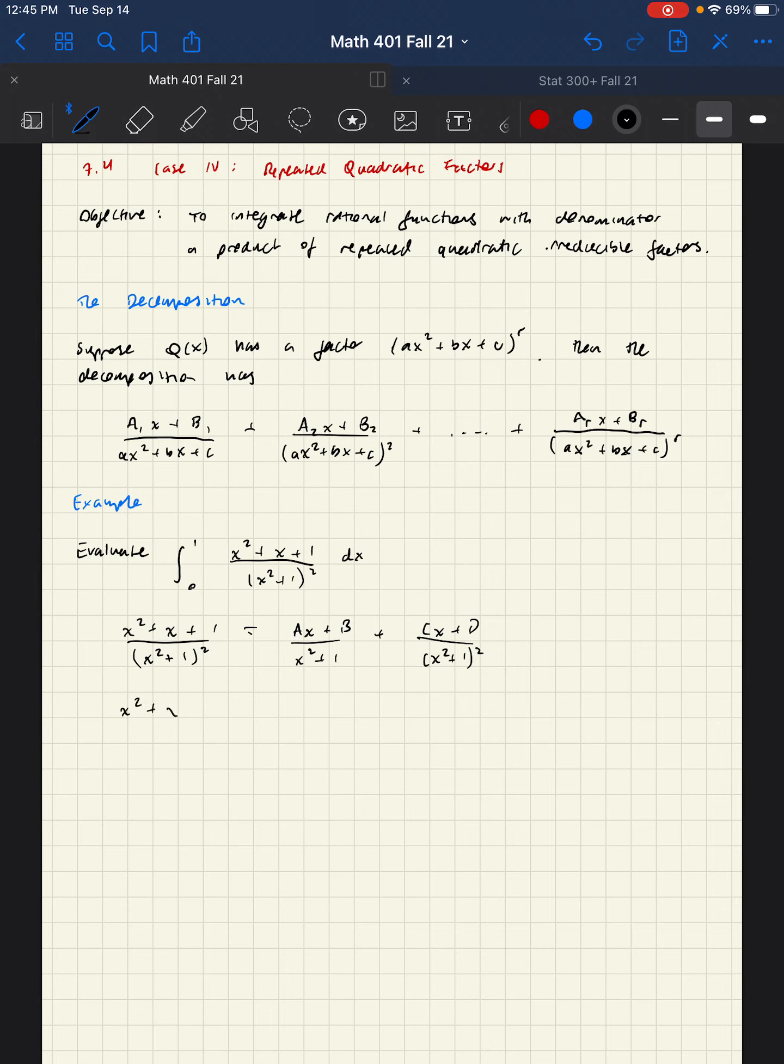Let's just follow our nose and convert this into something that we can handle. Multiply by the least common denominator. We get ax plus b times x squared plus one plus cx plus d, which equals ax cubed plus bx squared plus ax plus b plus cx plus d.